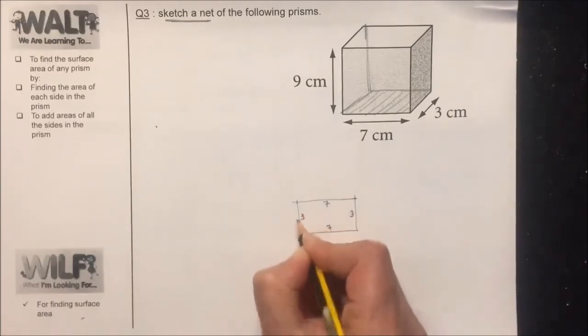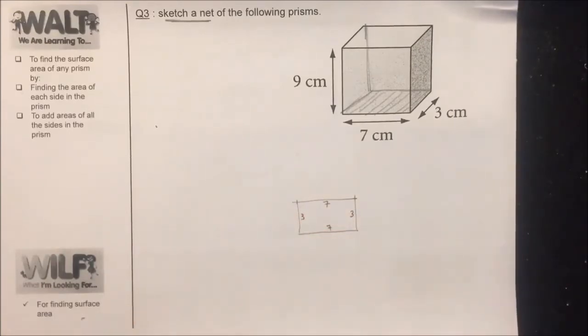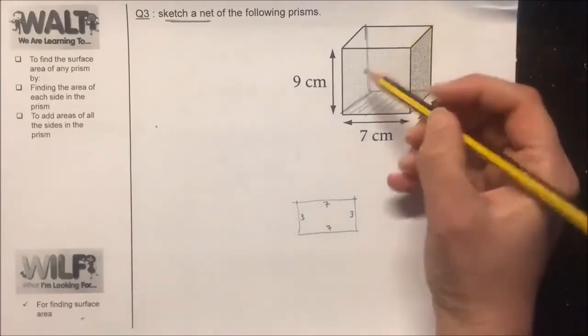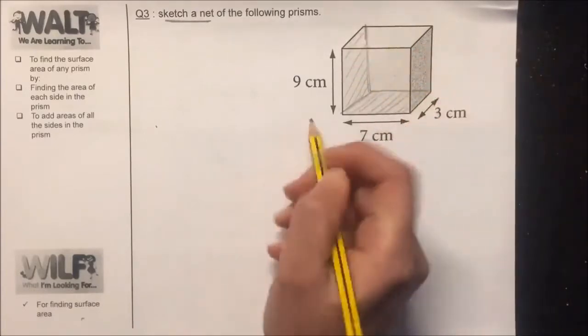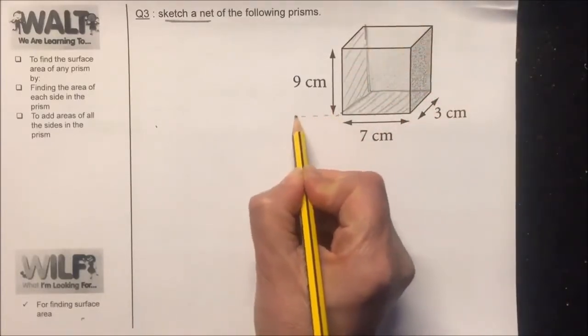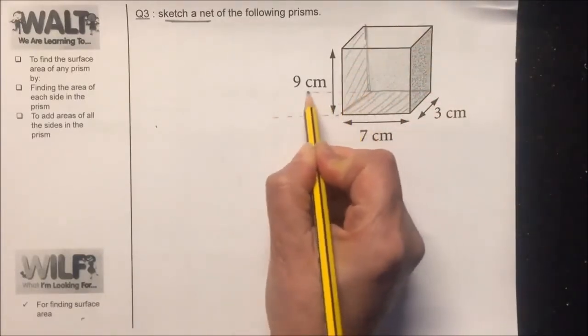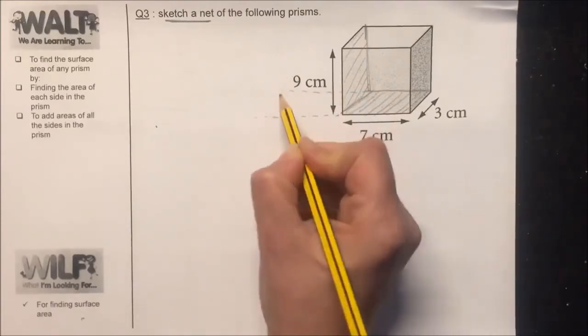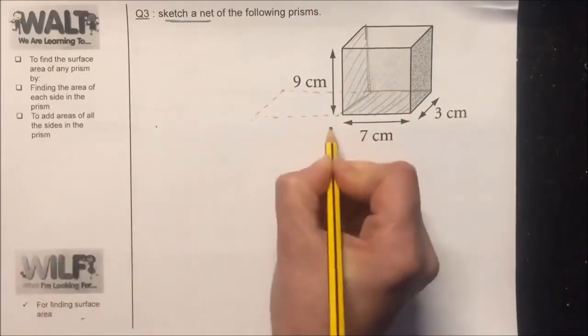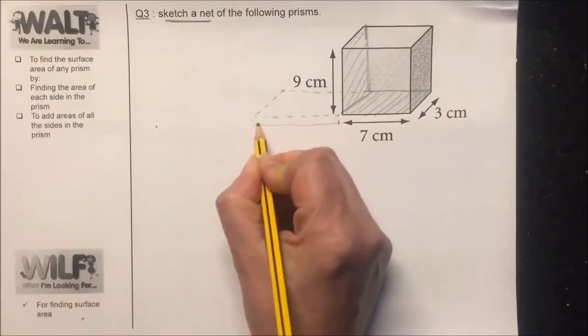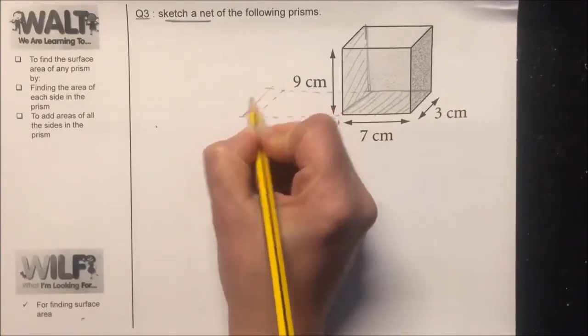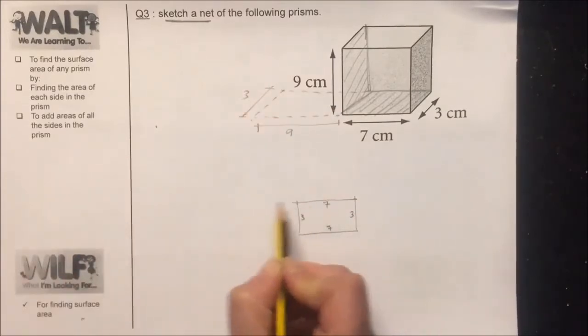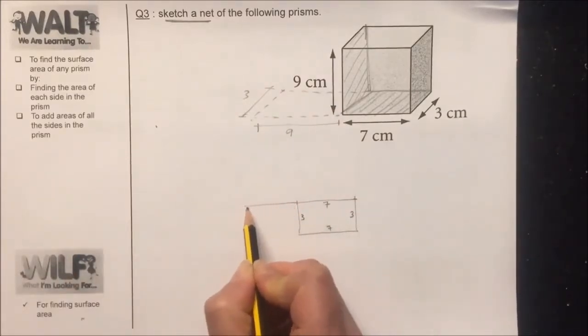Then I want you to imagine that the left side here is actually falling on the floor like this. So from here to here it's going to be 9, and from here to here when it falls on the floor it's going to be 3. Let's draw this rectangle here.